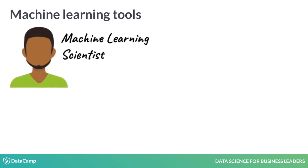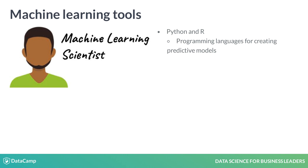Machine learning scientists use either Python or R to create their predictive models. Both are great programming languages for data science, and a candidate who knows one language can likely read code in the other.